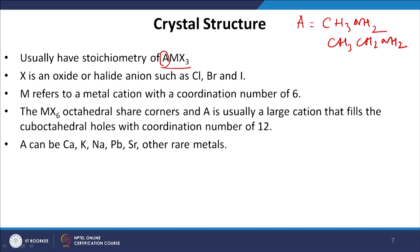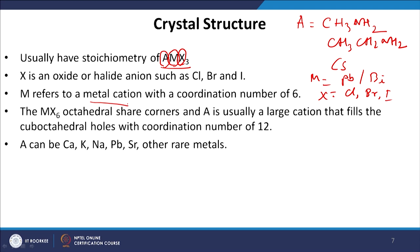M is a metal cation; we can use lead or bismuth, but lead is very extensively used. X is the halogen — chlorine, bromine, or iodine, or a combination of these, called mixed halide perovskites. X is an oxide or halide anion, and M refers to a metal cation with a coordination number of 6. Only metals with a coordination number of 6 are substituted in this kind of structure. The MX6 octahedra share corners, and A is usually a large cation that fills the cubo-octahedral holes with a coordination number of 12.